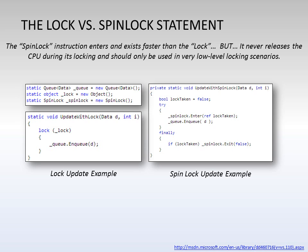C-Sharp also offers a SpinLock statement. The SpinLock enters and exits faster than the lock instruction does. However, it never actually releases a CPU during its locking. So this is really only good for very low level locking scenarios where maybe you're only locking on one statement — a repeated update occurring over and over again. There's definitely a performance trade-off that has to be considered between the benefit and speed you get versus the amount of CPU that the SpinLock actually uses.